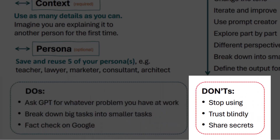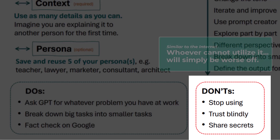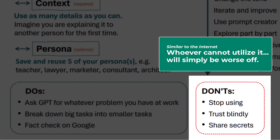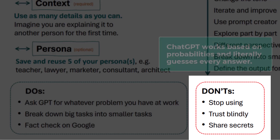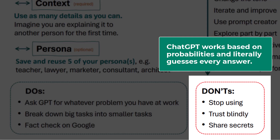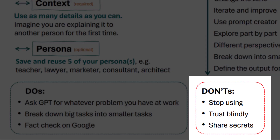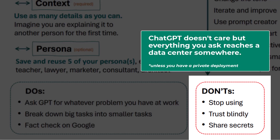And then the don'ts. Do not stop using ChatGPT — the world has changed forever. Whoever cannot utilize ChatGPT will simply be worse off. Number two: do not trust ChatGPT blindly. ChatGPT works based on probabilities and literally guesses every answer — be careful. Number three: do not share secrets. ChatGPT doesn't care, but your employer and bad actors might. You can get in serious trouble if you share secrets.